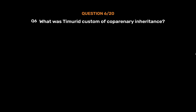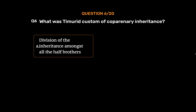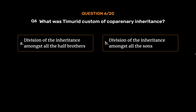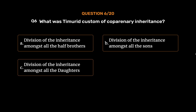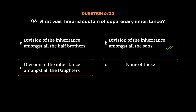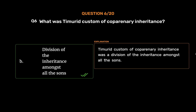Question 6: What was the Timurid custom of co-parcenary inheritance? Option A: Division of the inheritance amongst all the half-brothers. Option B: Division of the inheritance amongst all the sons. Option C: Division of the inheritance amongst all the daughters. Option D: None of these. The correct answer is Option B. The Timurid custom of co-parcenary inheritance was a division of the inheritance amongst all the sons.